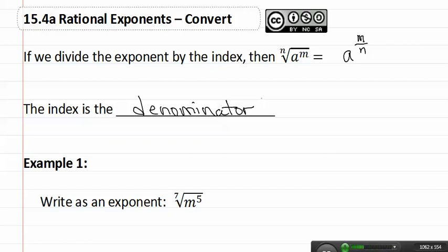So, let's see how this applies in example one. We can rewrite this as m five divided by seven. Remember, it is exponent over the index.